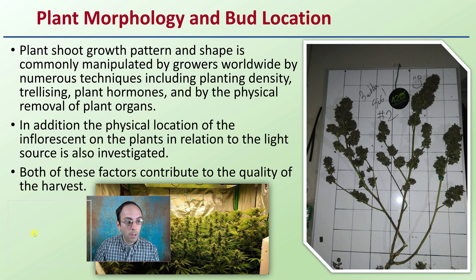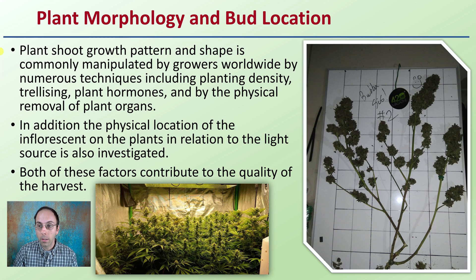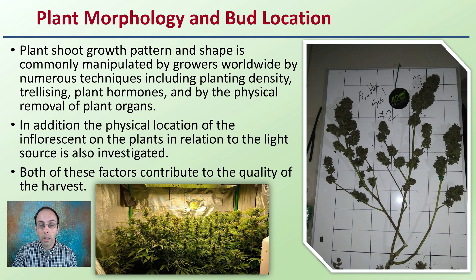Plant morphology and bud location: plants' shoot growth pattern and shape is commonly manipulated by growers worldwide by numerous techniques, including planting densities, trestling, plant hormones, and by the physical removal of plant organs. In addition, the physical location of the inflorescence on the plants in relation to the light source was also investigated in this study. Both these factors contribute to the quality of the total harvest, so we want to keep in mind that not only the structure of the plant, but the relation of those buds to the intensity of the light, can also impact overall quality.